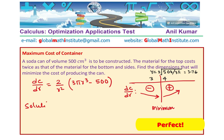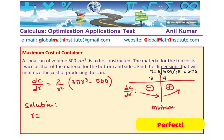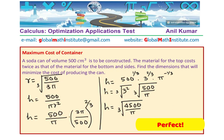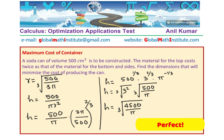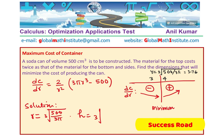Our solution is: r equals the cube root of 500 over 3 pi, and height equals the cube root of 4500 over pi. I hope you have understood how to solve these questions. The last part showing that the critical number is indeed a minimum is very important — without that, you cannot get full marks. Feel free to write your comments and suggestions. If you like and subscribe to my videos, that would be great. Thanks for your time and all the best.